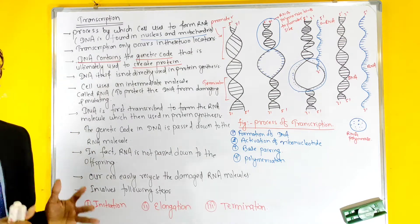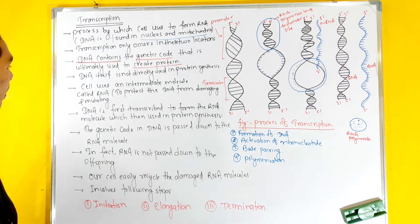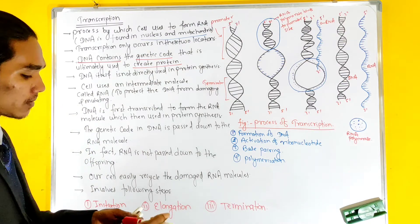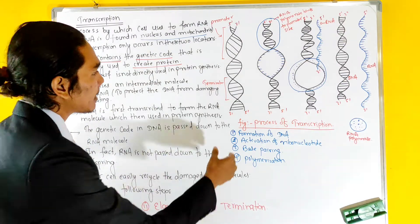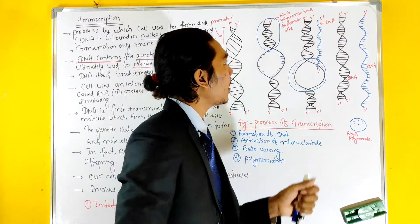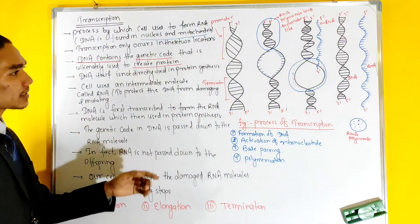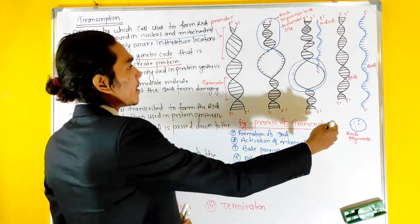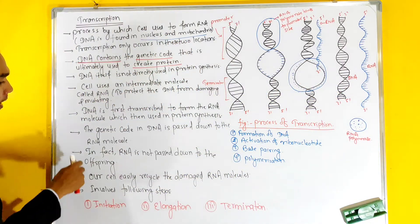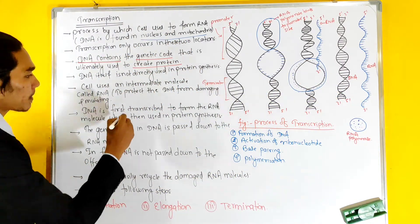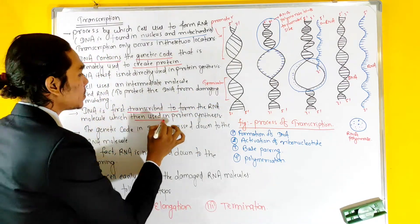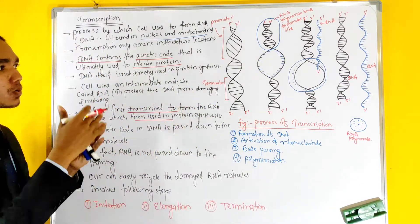RNA is used because DNA is first transcribed to RNA. DNA is first transcribed to form RNA molecules, which are then used in protein synthesis.